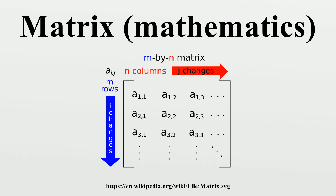The size of a matrix is defined by the number of rows and columns that it contains. A matrix with m rows and n columns is called an m times n matrix, or m by n matrix, while m and n are called its dimensions. For example, the matrix A above is a 3 times 2 matrix. Matrices which have a single row are called row vectors, and those which have a single column are called column vectors. A matrix which has the same number of rows and columns is called a square matrix.